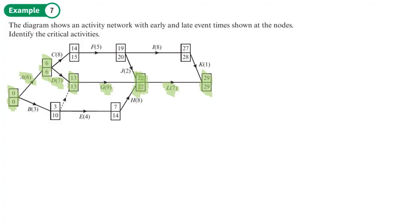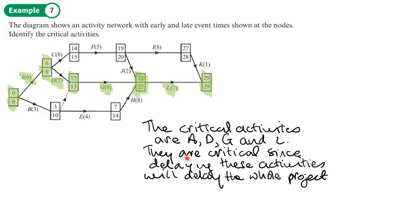So the critical activities are A, D, G, and L. And we could add here if we wanted to, although this is a definition of critical activities that are critical since delaying these activities will delay the whole project time.